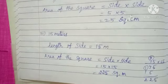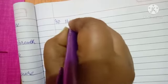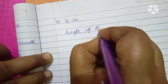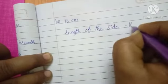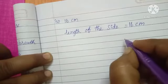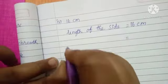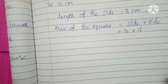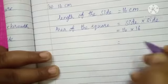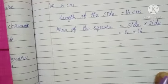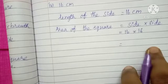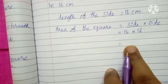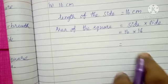Fourth sum: 16 centimeter. Length of the side equals 16 centimeter. Area of the square equals side multiply side. So 16 multiply 16 — find out the answer, children. Exercise number 1.2 is now complete. Thank you, children. Bye bye.